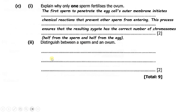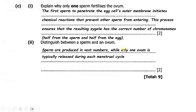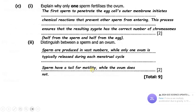Part 2: distinguish between a sperm and an ovum. Sperm are produced in vast numbers while only one ovum is typically released during a menstrual cycle. Another difference is that sperm have a tail for motility while the ovum does not. You can also say that a sperm cell is smaller than an ovum. So we have come to the end of this quick revision. I hope you have gained some insight. Bye.